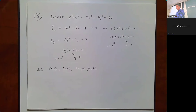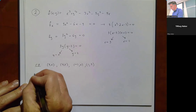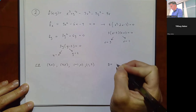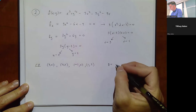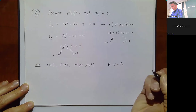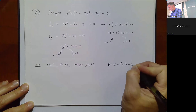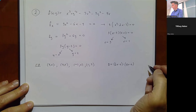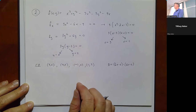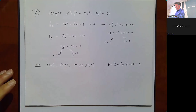Now calculate D. fxx = 6x - 6, fyy = 6y - 6, and fxy = 0, so D = (6x - 6)(6y - 6) - 0². We start plugging in each critical point systematically.